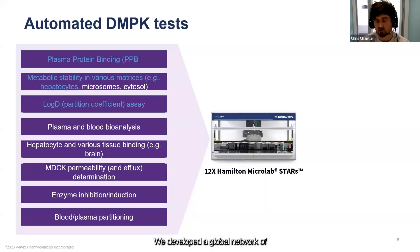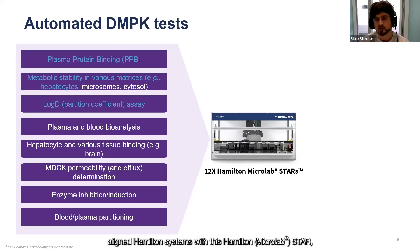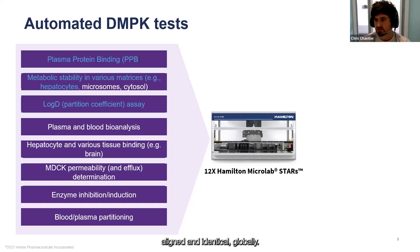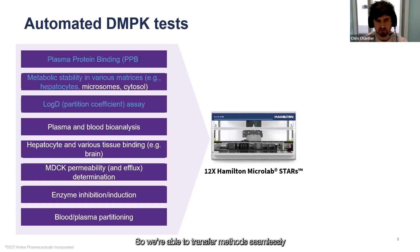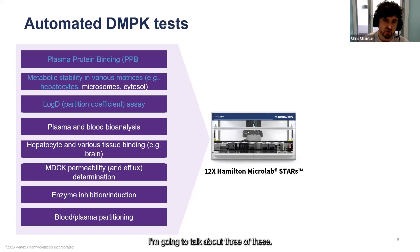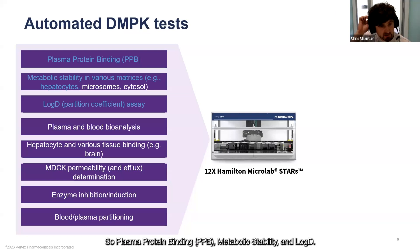We've developed a global network of aligned Hamilton systems — specifically the Hamilton STAR. We have 12 of these systems that are all aligned and identical globally, so we're able to transfer methods seamlessly across global sites. I'm going to talk about three of these assays: plasma protein binding, metabolic stability, and LogD.